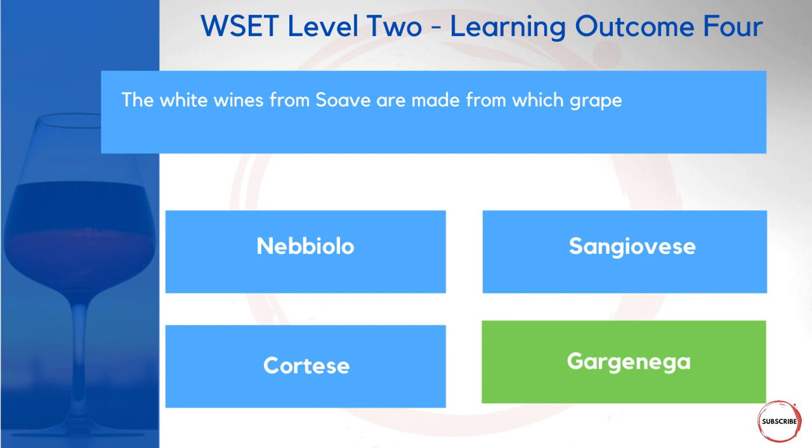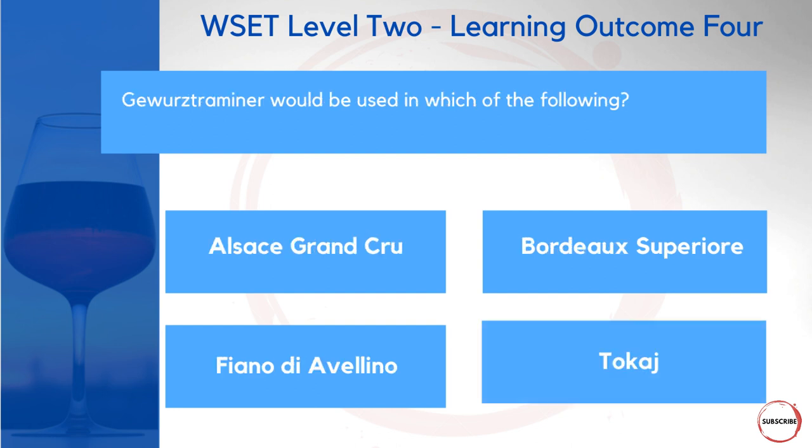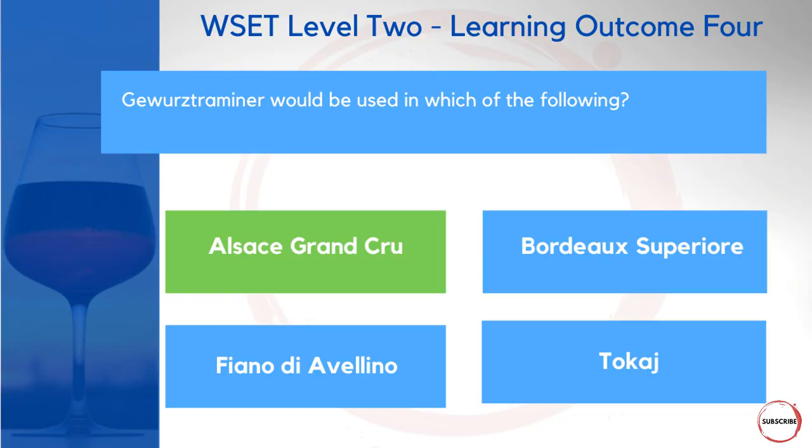Gewürztraminer would be used in which of the following? Would it be an Alsace Grand Cru, a Bordeaux Supérieur, a Fiano di Avellino, or a Tokaj? What's trickier here is that all the answers could be associated with white wines. But from our earlier slide on Gewürztraminer, the popular GI covered on the course is Alsace — so Alsace Grand Cru is the correct answer.